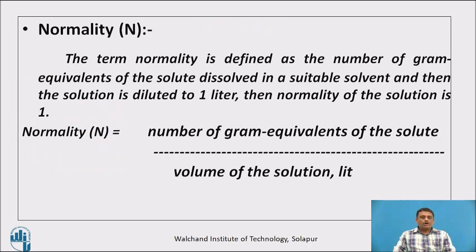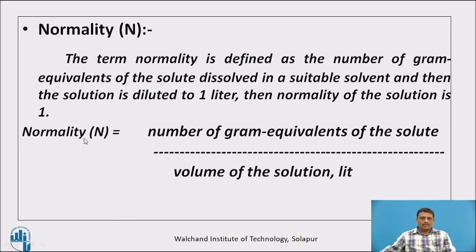What do we mean by normality? The term normality is defined as the number of gram equivalents of the solute dissolved in a suitable solvent, and then the solution is diluted to 1 litre. The normality of the resultant solution is 1 normal. So a 1 normal solution is prepared by dissolving 1 gram equivalent of the solute in 1 litre of volume. Normality equals the number of gram equivalents of the solute divided by volume of the solution in litres.